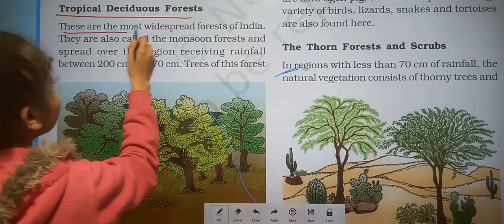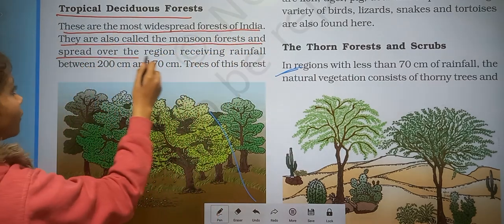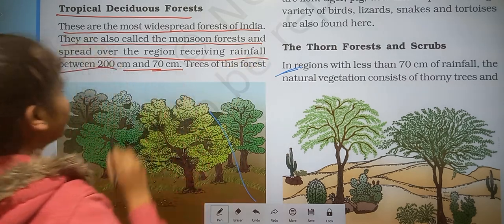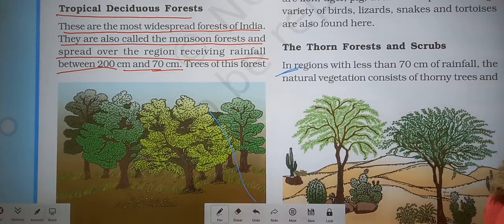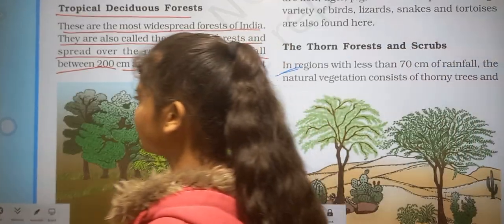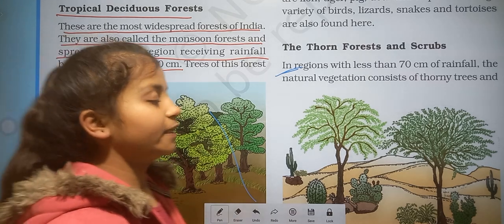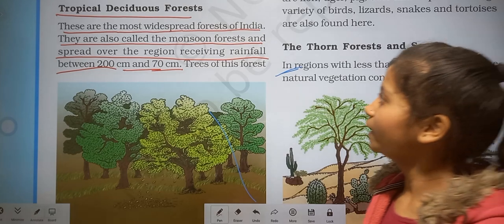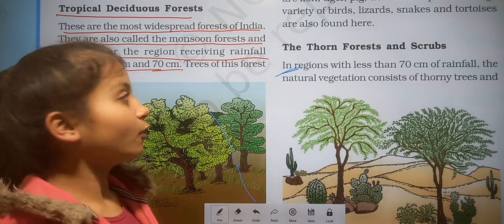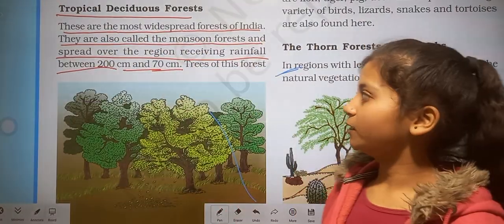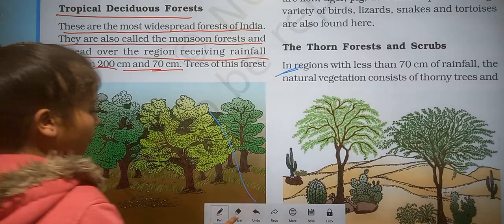Tropical deciduous forests are the most widespread forests of India. They are also called the monsoon forest and spread over the region receiving rainfall between 200 centimeters to 70 centimeters. This makes it the most widespread forest type spread all over India. They are also called monsoon forest.